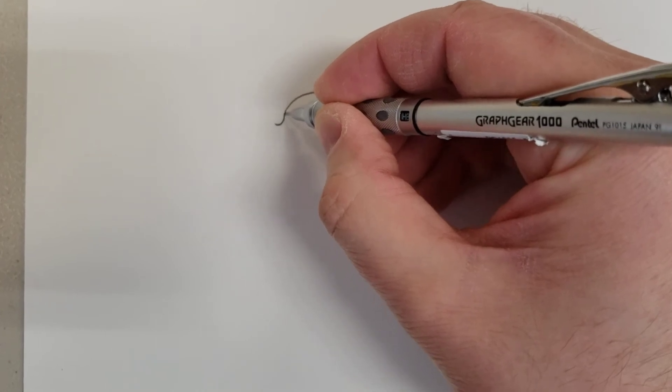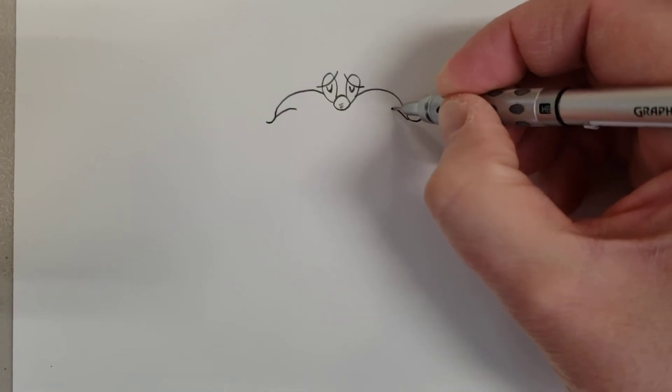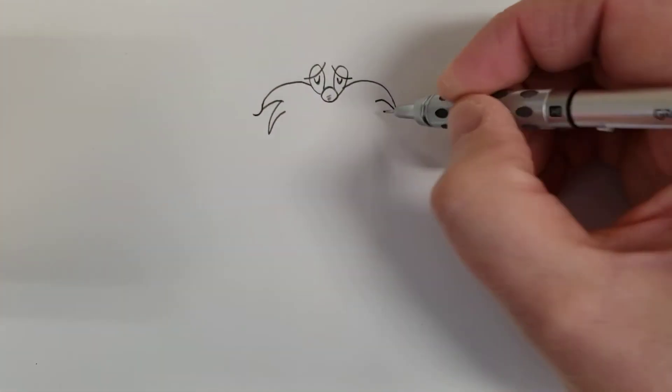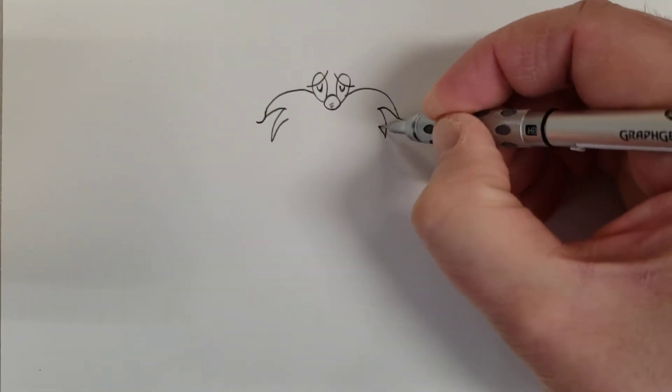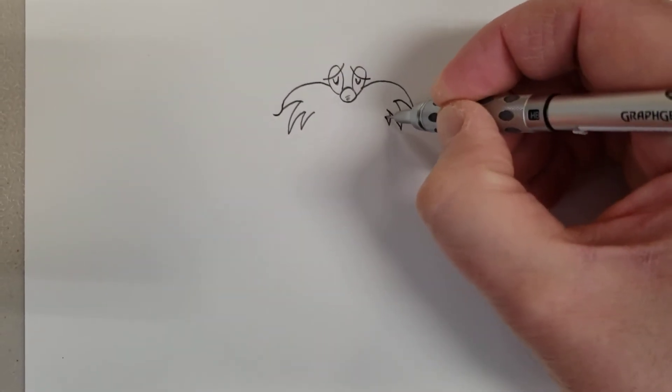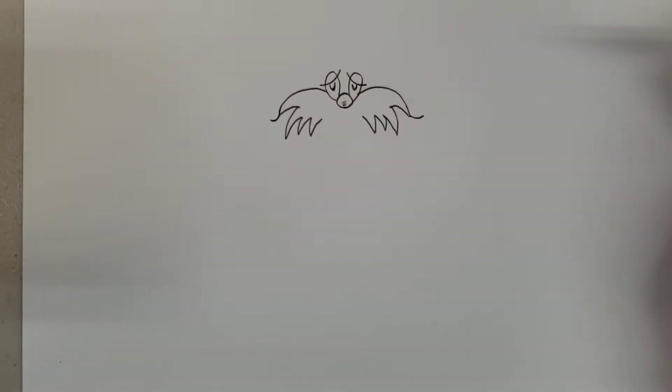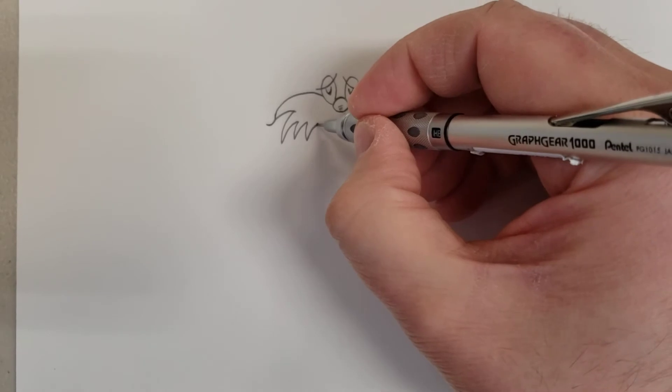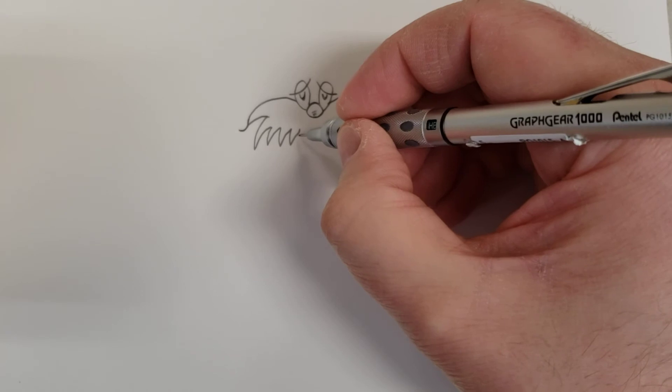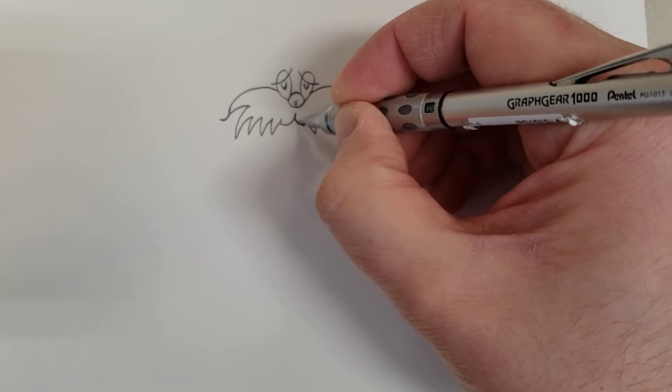There you go, one and one. Now down and back up for two, down and back up for three, down and back up for four, down and back up for five on each side. Then you're going to make two curve lines to meet sort of underneath the nose.